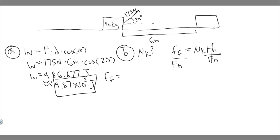To find the frictional force, we look at the sum of forces in the x-direction. Since the crate moves at constant speed, the net force is zero. So the sum of forces in the x-direction equals zero, and we set up the equation accordingly.